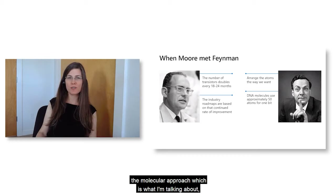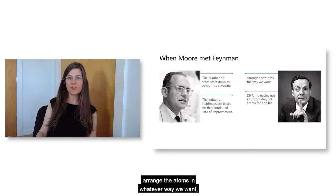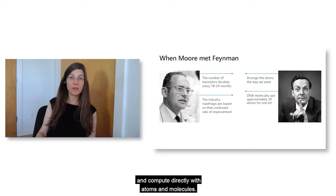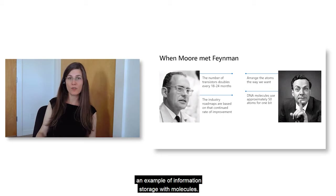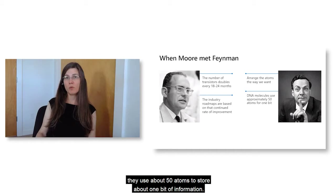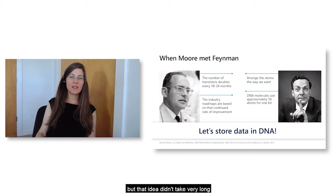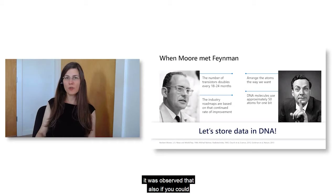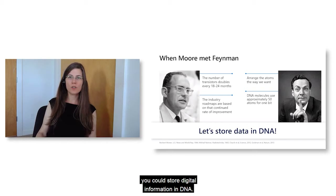To contrast this with the molecular approach, the example here is Feynman. In one of his famous lectures, Feynman essentially advocated that if we can arrange the atoms in whatever way we want, we should be able to store and compute directly with atoms and molecules. In fact, in this lecture he even used DNA as an example of information storage with molecules. He pointed out that DNA molecules use about 50 atoms to store about one bit of information. A few years later, it was observed that if you could manipulate how to make DNA molecules, you could store digital information in DNA.